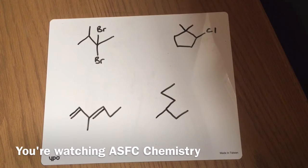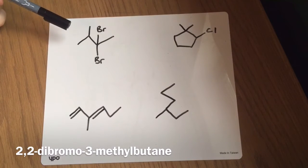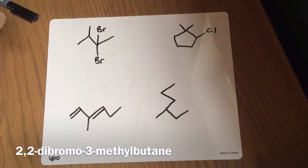Alright everyone, hopefully you've paused it and had a good go at these. We're going to go through each of the names of these now. So starting off here at the top left hand side, this one is 2,2-dibromo-3-methylbutane.